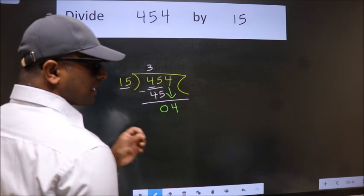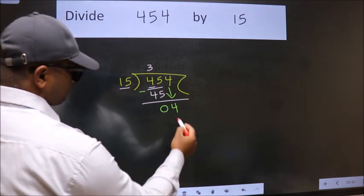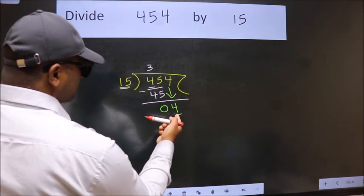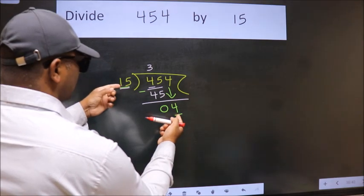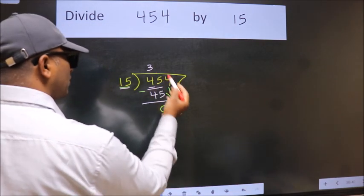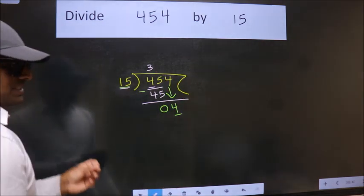After this step, the mistake happens. And the mistake is this: here we have 4, here 15. 4 is smaller than 15, so what many do is they directly put a dot and take 0, which is wrong.